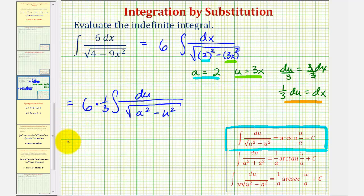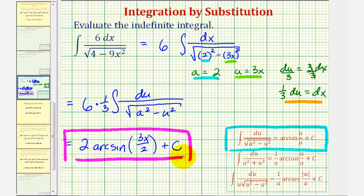6 times one-third equals 2, so we have 2 arcsin of u over a, which would be 3x over 2, plus c. This is our antiderivative. I hope you found this helpful.